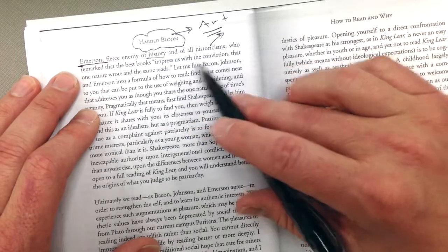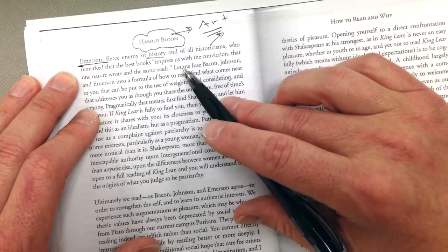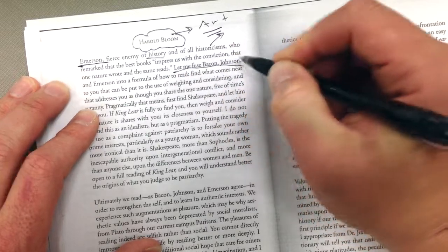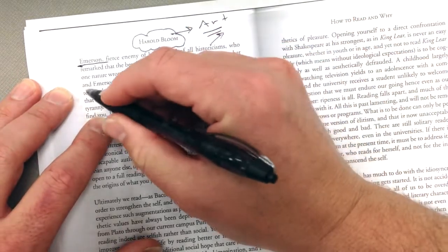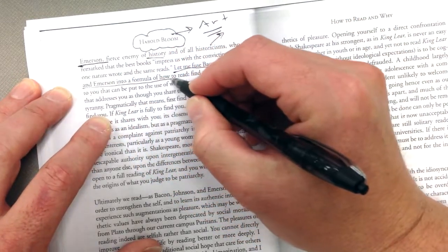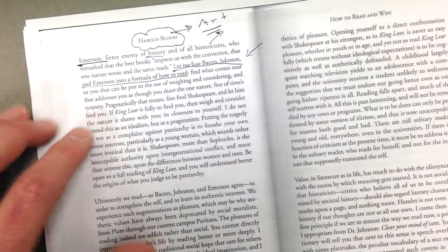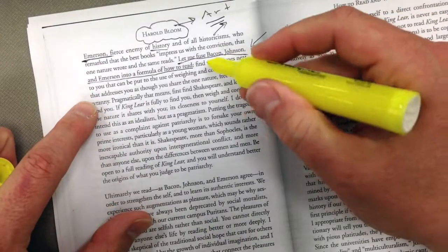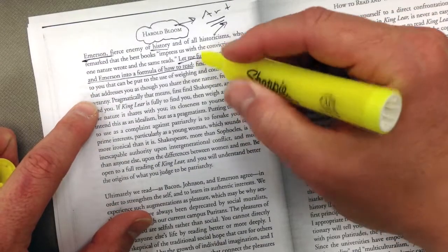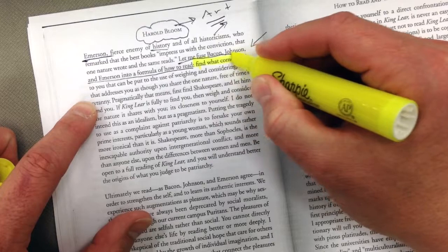And presses with conviction that one nature wrote in the same reads. So he puts all these things together. This is synthesis. He's synthesizing Bacon, Johnson, and Emerson into a formula for how to read. And this is something that you want to have highlighted, and I'm going to talk about for a while. All right. We're six minutes in here. We've got some time left.